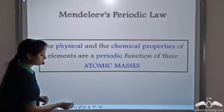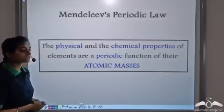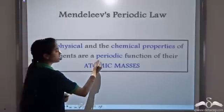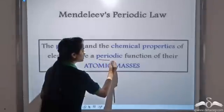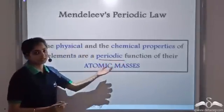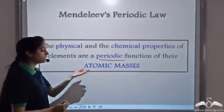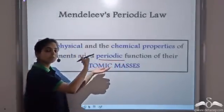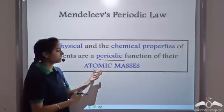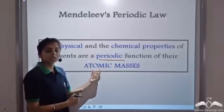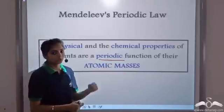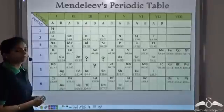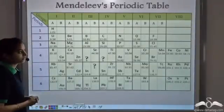According to his law, the physical and the chemical properties of the elements are a periodic function of their atomic masses. Periodic function means that the properties of elements repeat when the elements are placed according to their atomic masses. So, Mendeleev gave his periodic table.